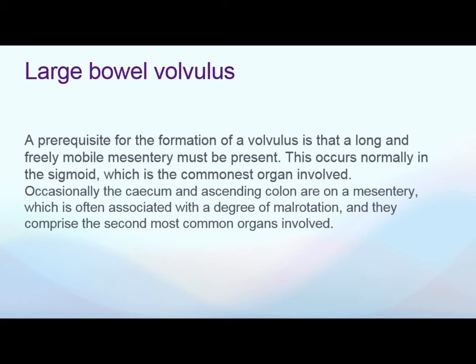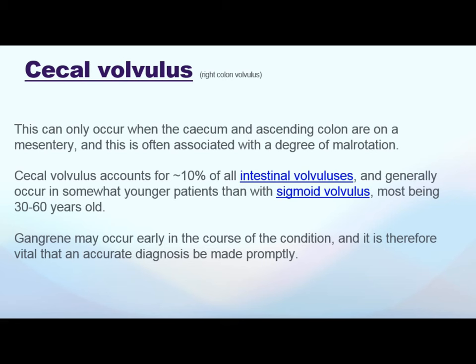Large bowel volvulus has two most common types: cecal and sigmoid. A prerequisite for volvulus formation is that a long and freely mobile mesentery is present. This occurs normally in the sigmoid — which is why it is the most common — and occasionally in the cecum and transverse colon when there is a mesentery variation. Cecal volvulus is also called right colon volvulus, but it can occur on both the right and left sides — about 50-50 — because it can migrate.